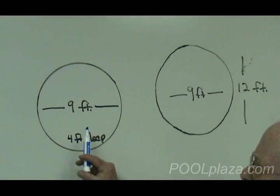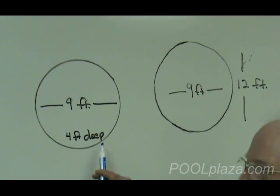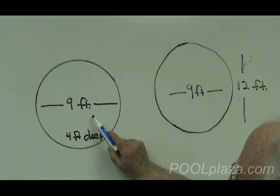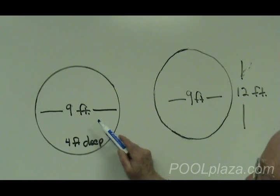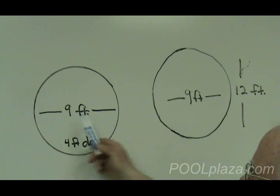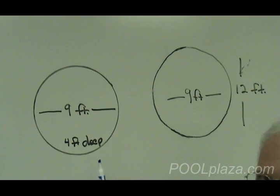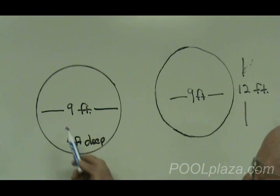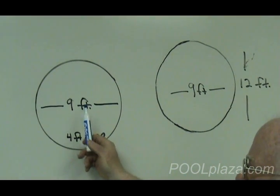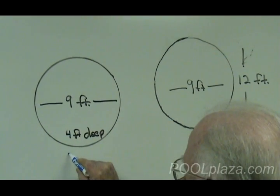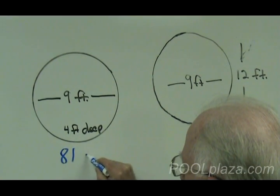Many people have round pools. We'll say for purposes of discussion, this is an above ground round pool, 9 feet in diameter. For a round pool, you multiply the diameter times itself, 9 times 9, which gives you a surface area of 81 square feet.